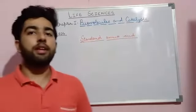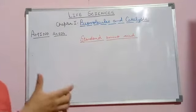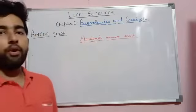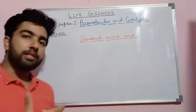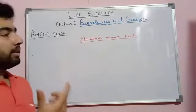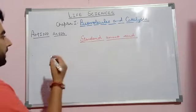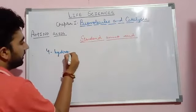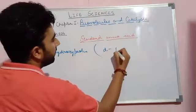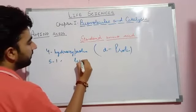Now let us discuss non-standard amino acids. Non-standard amino acids are those amino acids that are not formed during the ribosomal translation process. They are formed either during post-translational modification or due to some modification of standard amino acids. For example, 4-hydroxyproline is a derivative of proline, and 5-hydroxylysine is a derivative of lysine.